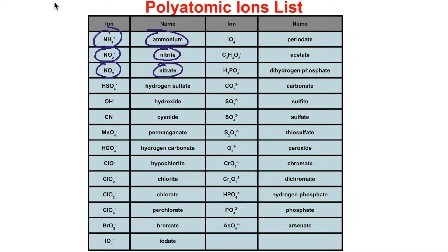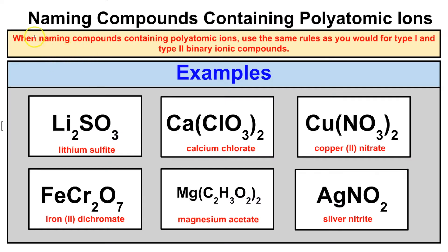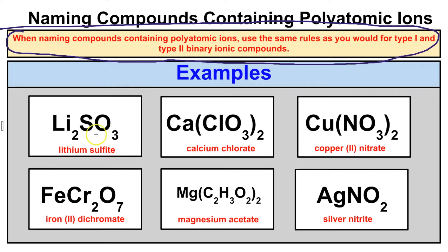Let's start looking at some of the rules for naming and writing the chemical formulas for compounds containing polyatomic ions. When naming compounds containing polyatomic ions, we use the same rules as we would for Type 1 and Type 2 binary ionic compounds. If you forgot how to name Type 1 and Type 2, click the card in the top right corner to go to that video. For now, let's take a look at some examples.